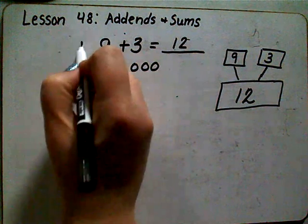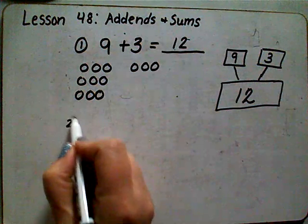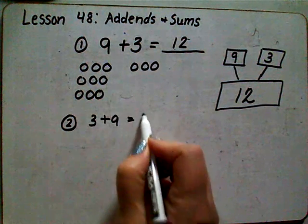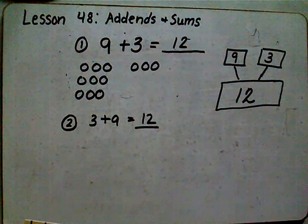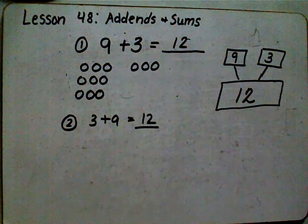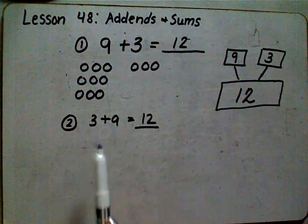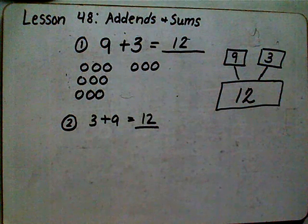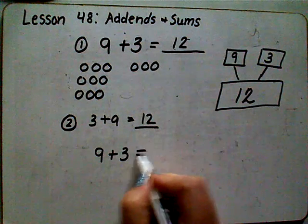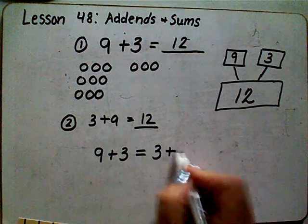Can you tell me the other equation that goes along with our part-part-whole, besides nine plus three equals twelve? Thinking about our order rule and switcheroo fact — if you said three plus nine equals twelve, you are correct. So nine plus three equals twelve, and using the order rule, three plus nine also equals twelve.